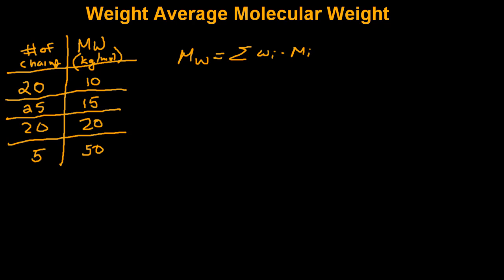So first we need to determine the total weight of the sample. So to do that we'll just sum up the contributions of each chain to the sample as a whole. Just to be clear, the table on the left column is the number of chains and the right column is the molecular weight of those chains in kilograms per mole. If we were to sum this up we get a total weight of 1225.